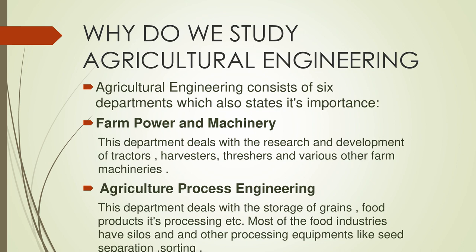Why do we study agricultural engineering? Agricultural engineering consists of six departments, which also state its importance. The first department is Farm Power and Machinery. This department deals with the research and development of tractors, harvesters, threshers, and various other farm machinery.